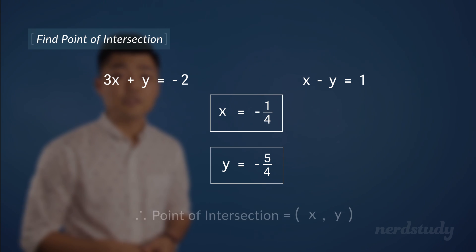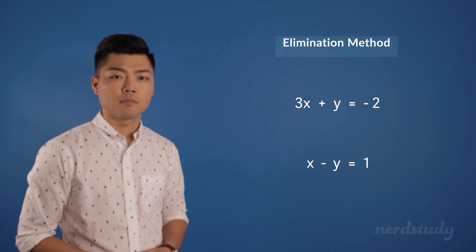Thus, our point of intersection between these two linear equations is the coordinates negative one over four, comma, negative five over four. Awesome.